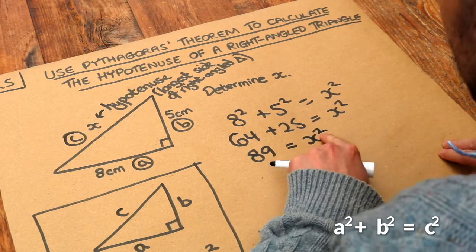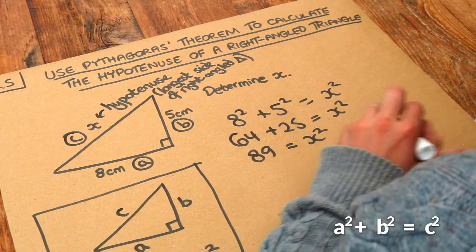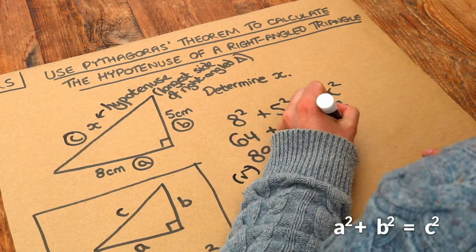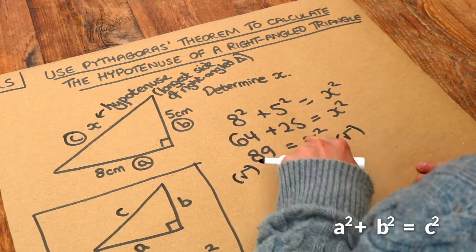And then if X is being squared to give 89, how do we find X? How do we get rid of that squared? Well, we just need to square root both sides of the equation.